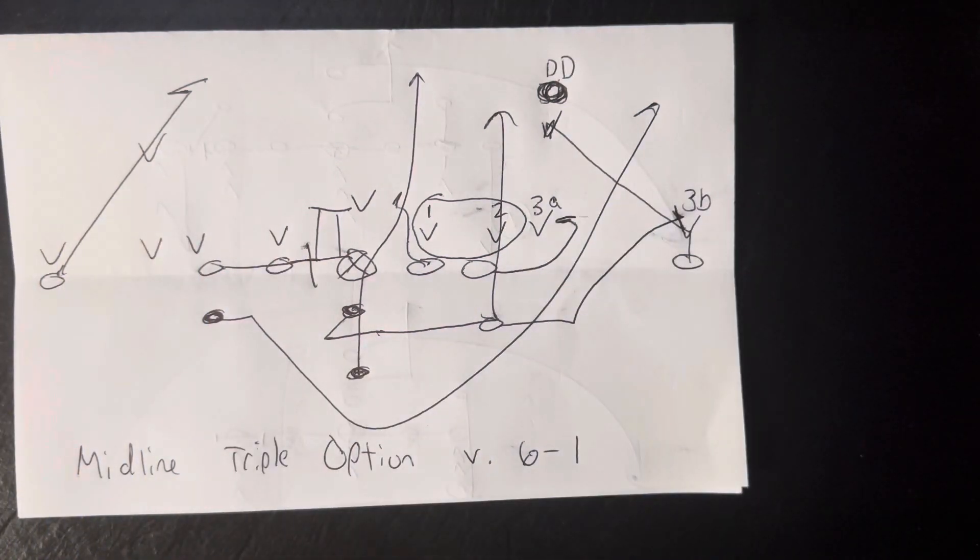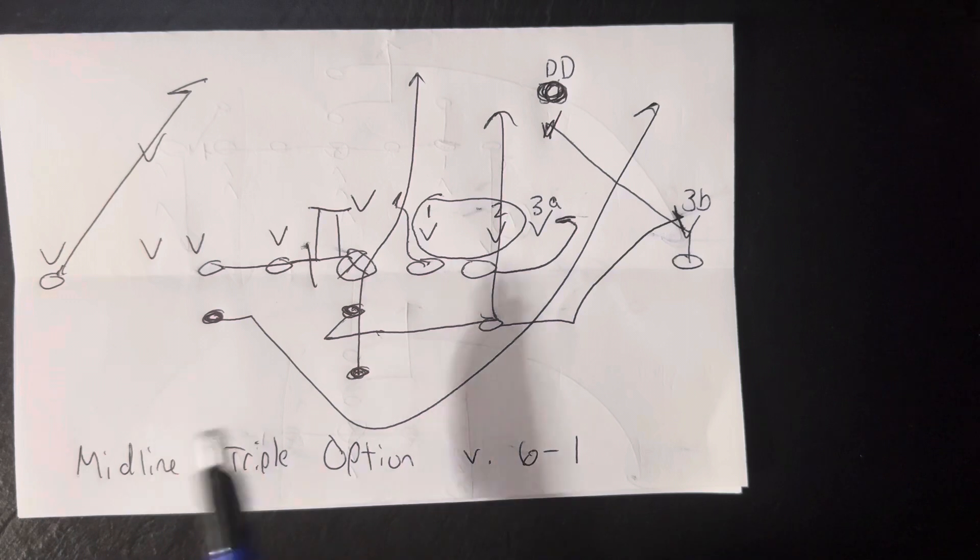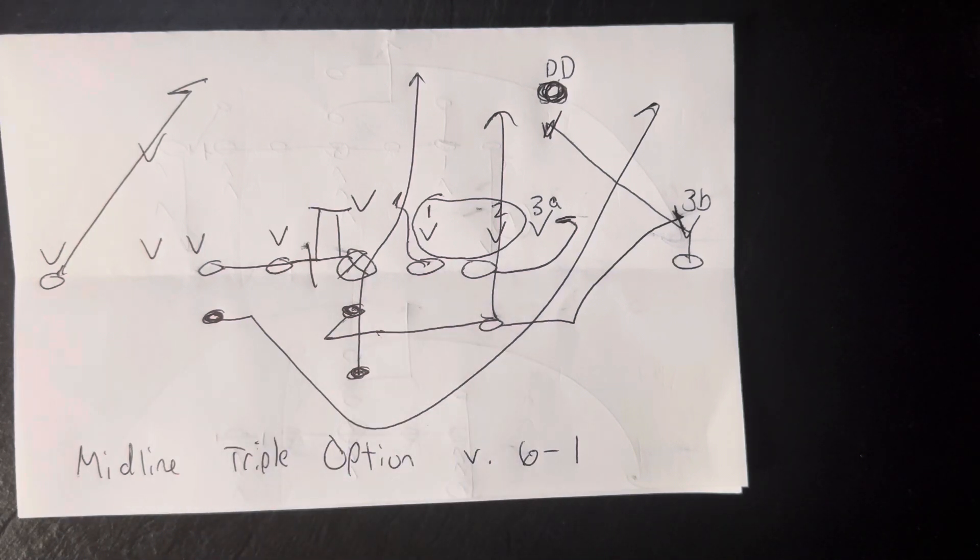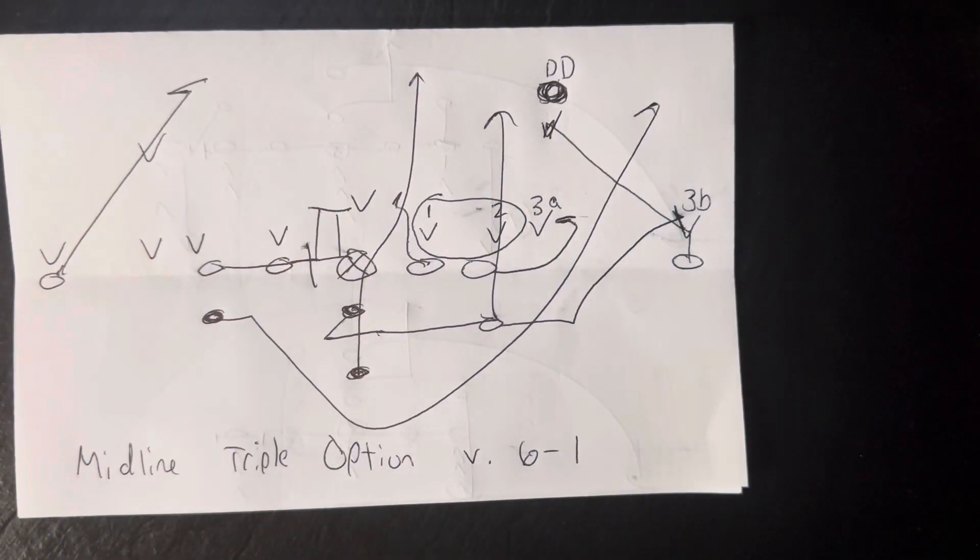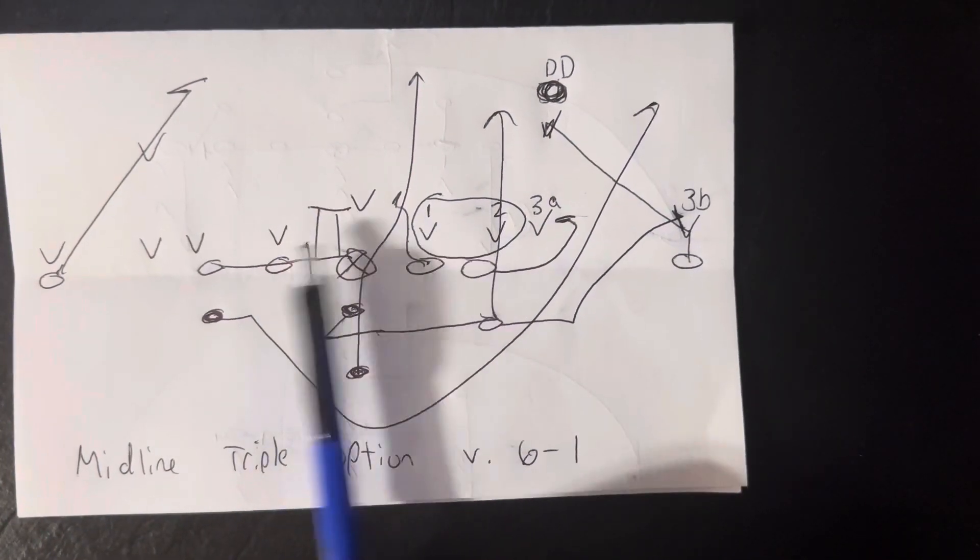The backside receiver sprints to the goalpost. The quarterback is going to take the snap. He's going to jump back, point the ball. B-back's going to sprint through the ball, sprint through the playside hip of the guard, and sprint through the end zone unless number one can take the B.